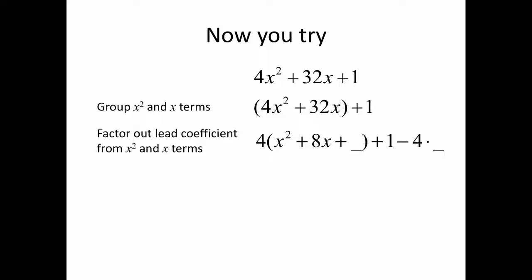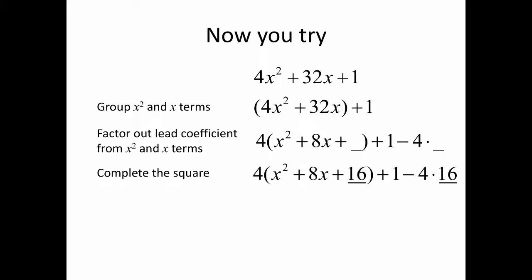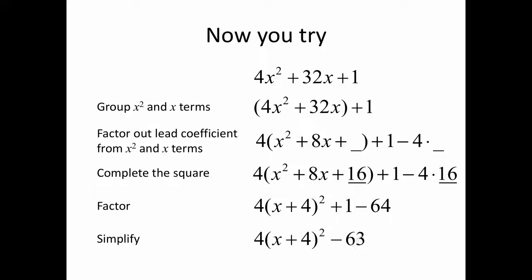Remember to subtract 4 times whatever we put into that empty space. We complete the square: half of 8 squared is 16. So we add 16 inside the parentheses and take away 4 times 16 outside. We factor the trinomial into x plus 4 squared, simplify the constant term, and there's our result.